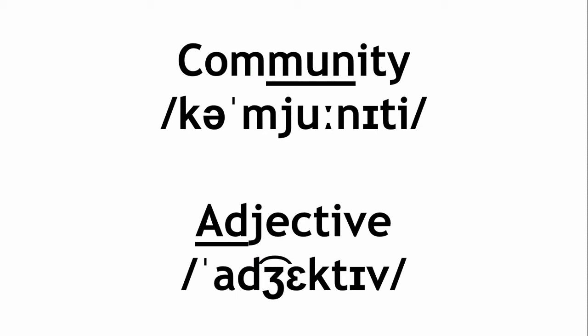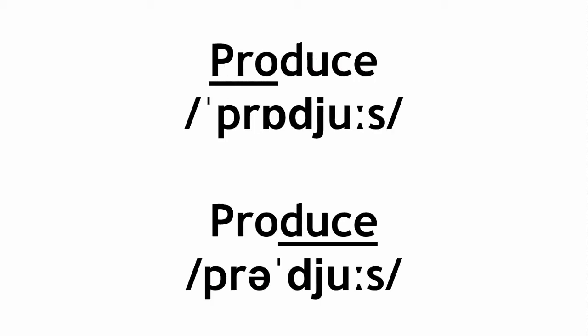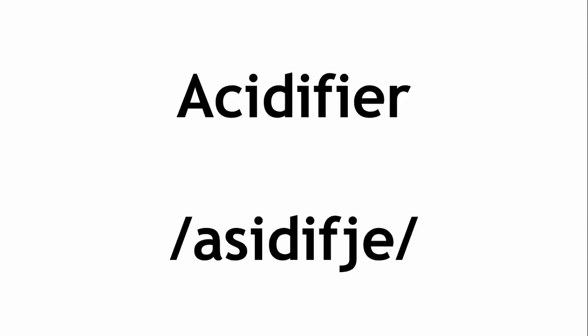Sometimes stress can be phonemic — it distinguishes words. English occasionally does this, with pairs such as 'produce' (noun) and 'produce' (verb). A few languages can be said to have no stress; the most notable example here is French.